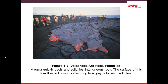Magma will quickly cool and turn into igneous rock, as we learned in the Geosphere Materials module. This photo is taken in Hawaii showing the molten rock turning into grey igneous rock as it cools.